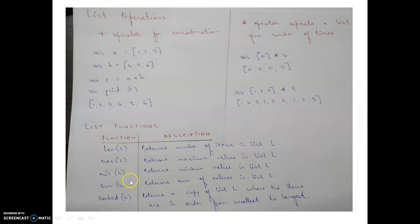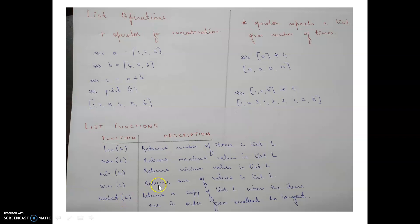List functions include: len(), which gives the number of elements; max(l), which returns the maximum value in the list; min(l), which returns the minimum value; sum(l), which sums all elements; and sorted(l), which returns the list in ascending order. In each case, you pass the list name as the argument.